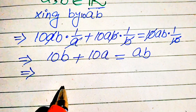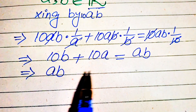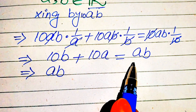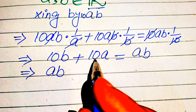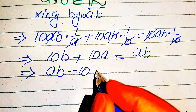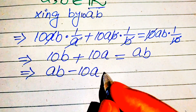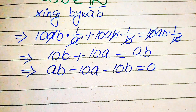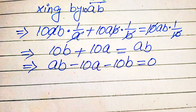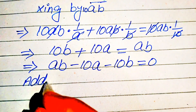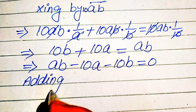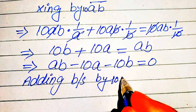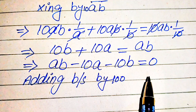Now we need more simplification. We move the two terms on the left to the right-hand side. After moving them, we have ab on the right. Since those two terms were positive, moving them makes them negative. So we write ab minus 10a minus 10b equals 0.